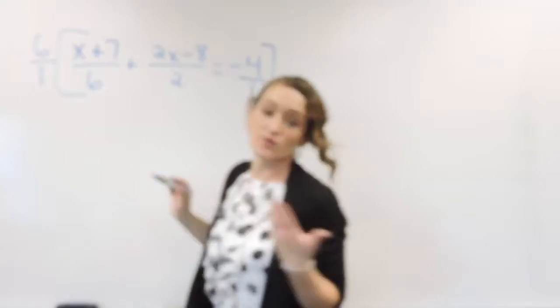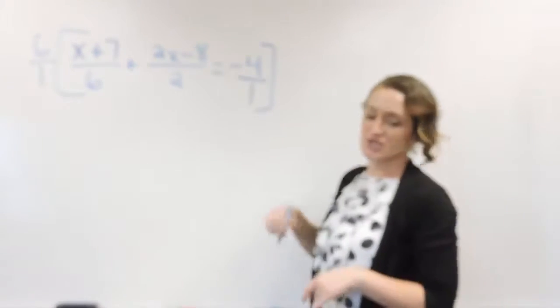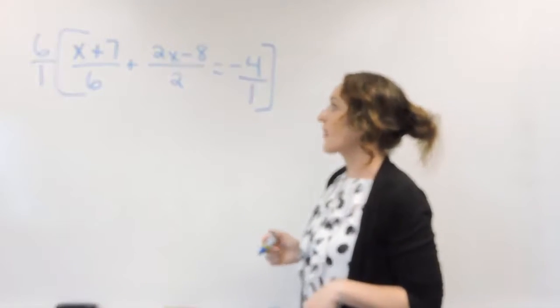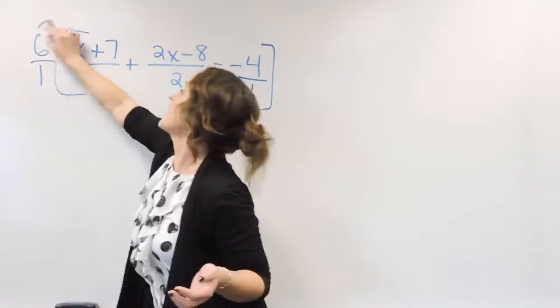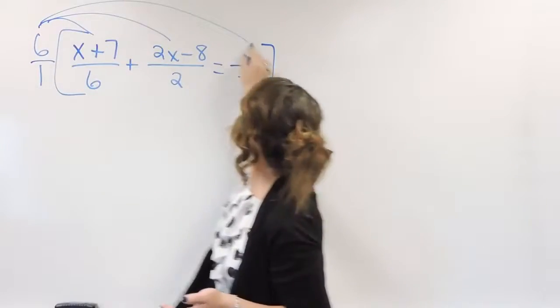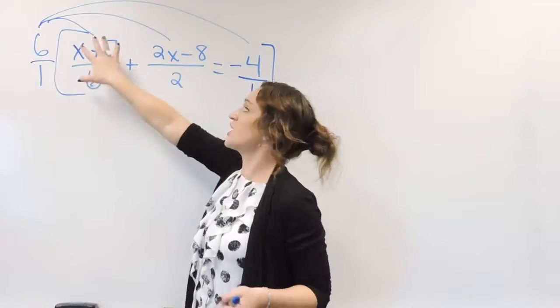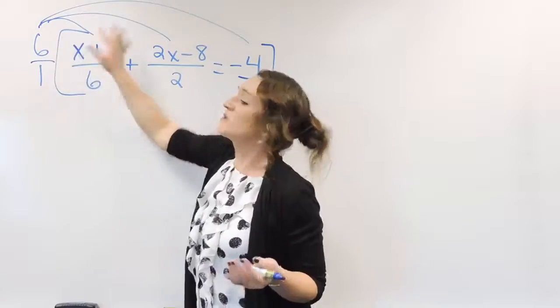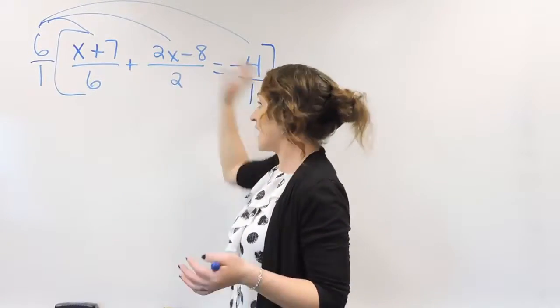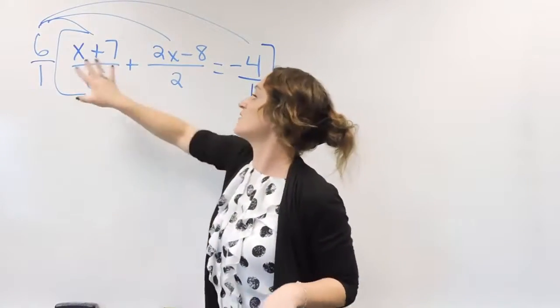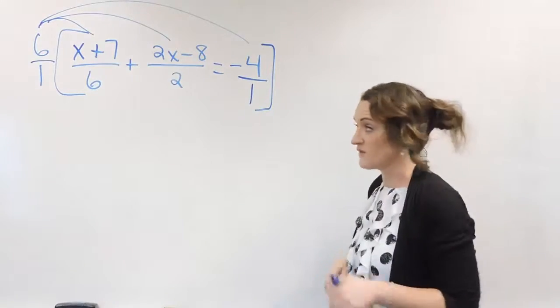Or technically 6 over 1. We're talking about fractions, so let's go ahead and make it a fraction. And what we're going to do is we're going to take that 6 and we're going to distribute it to everything in this equation because we can't just multiply it by 1. We need to multiply it by everything so that we can get rid of our fractions in every single one of these.